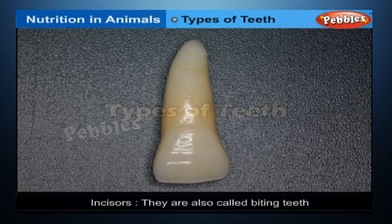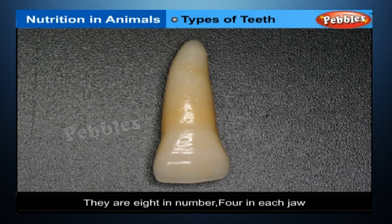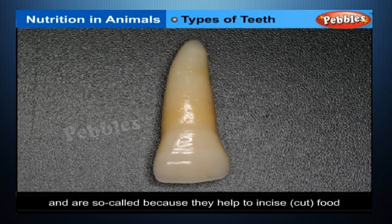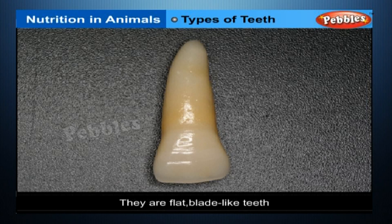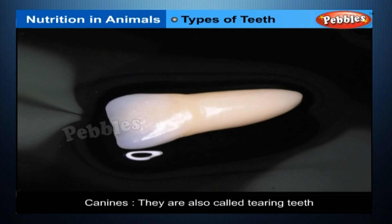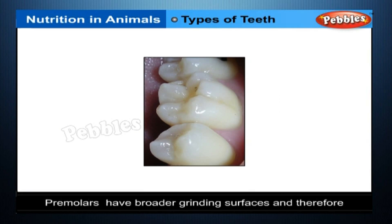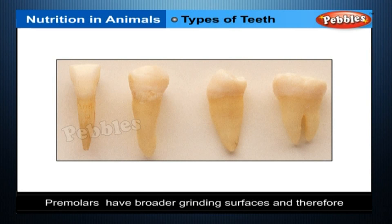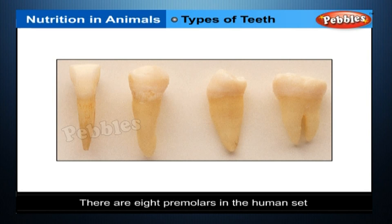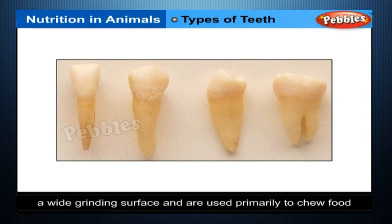Types of Teeth. Incisors: Also called biting teeth, they are 8 in number — 4 in each jaw. They are the front teeth and help to incise and cut food; they are flat, blade-like teeth. Canines: Also called tearing teeth, they have very sharp edges and help in tearing food; they are 4 in number. Pre-molars: They have broader grinding surfaces and help in chewing and grinding of food; there are 8 pre-molars in the human set. Molars: Large back teeth with a wide grinding surface used primarily to chew food; humans have 12 molars.